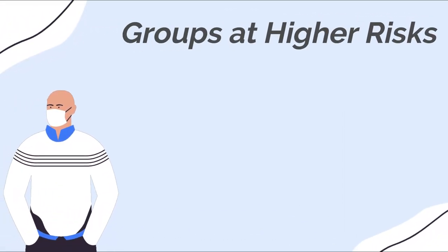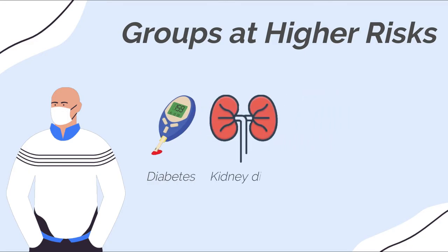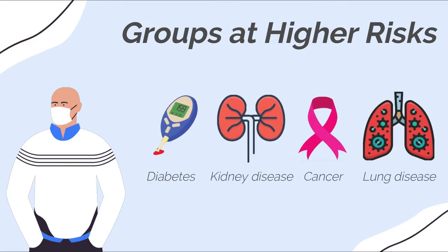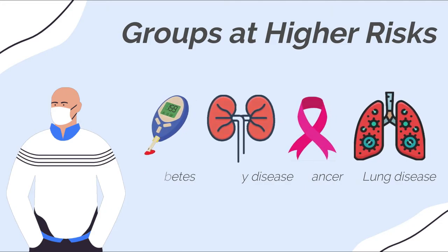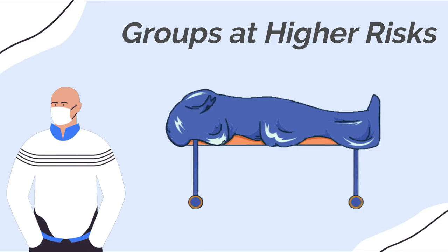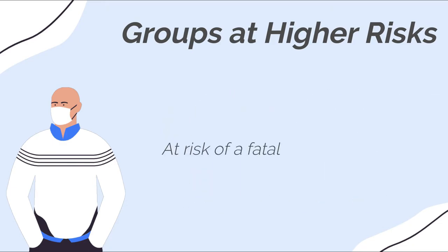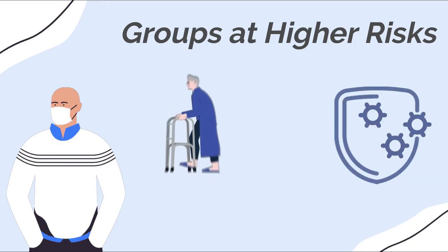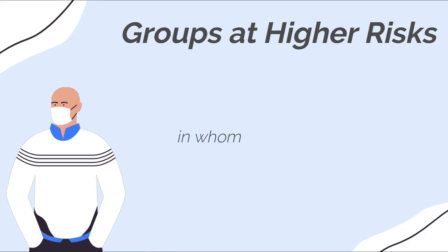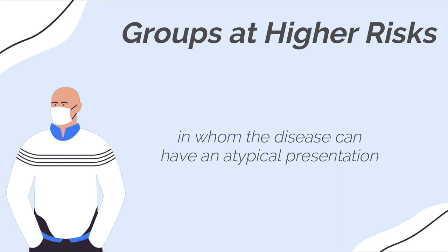In people with chronic conditions, diabetes, kidney disease, cancer and lung disease, Middle East respiratory syndrome can complicate severe acute respiratory failure and lead to death. At risk of a fatal outcome are the elders and the immunodepressed, in whom the disease can have an atypical presentation.